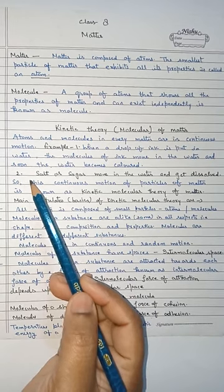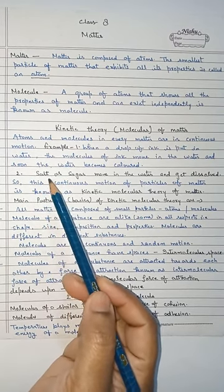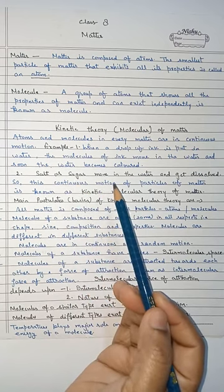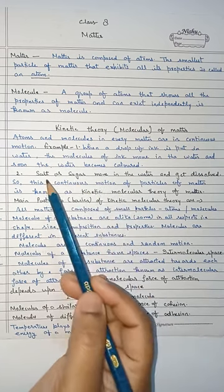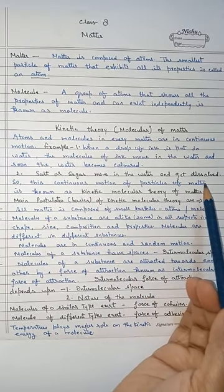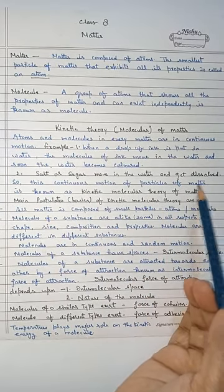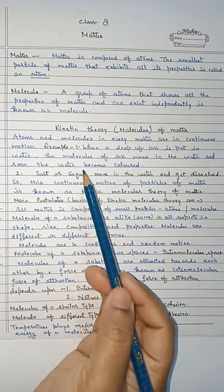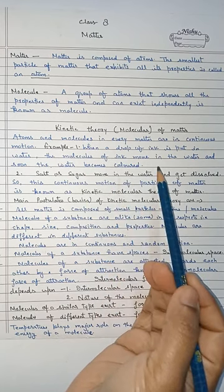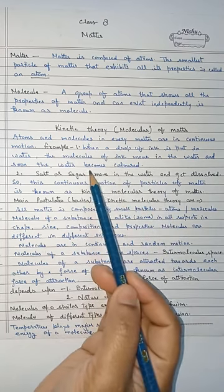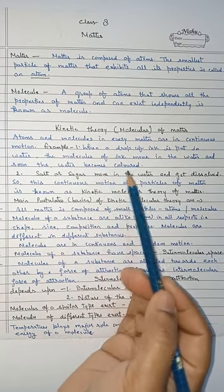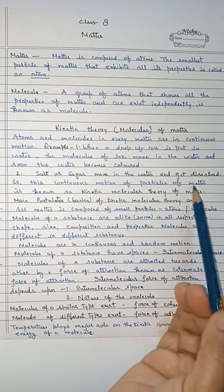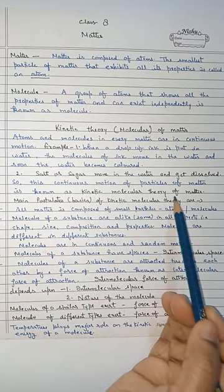You can understand it with the second example. If you take one spoonful of salt or sugar and if you mix it in a glass of water, you will see that salt or sugar move in the water and get dissolved. So, because of this movement of the molecules, the molecules of ink easily dissolve in the water and the water becomes colored. So, this continuous motion of particles of matter is known as kinetic molecular theory of matter.